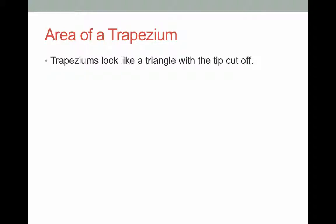For a trapezium, a trapezium looks like a triangle with the tip cut off. This is what a trapezium looks like. It has one pair of parallel lines that we know are parallel because of the arrows.